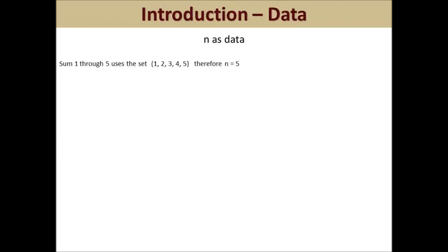Let's talk about the letter N we keep seeing in all these functions. As the primary parameter of your algorithm, N can represent a number of things: the degree of a polynomial, the count of records in a database, the size of a string, or some other measurement which determines the size of the problem. For example, when calculating the sum of 1 through 5 using the set {1, 2, 3, 4, 5}, N equals 5 since we had 5 elements in our set.